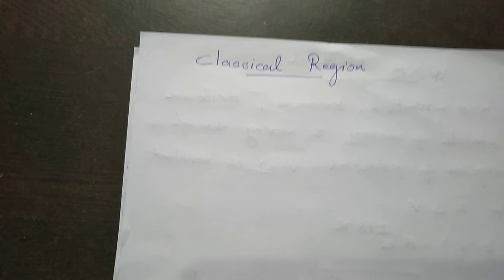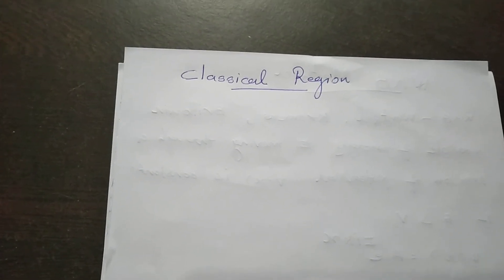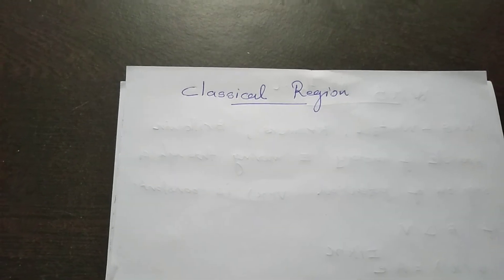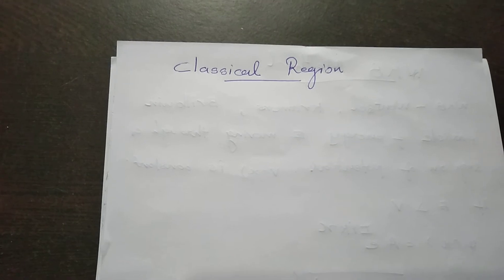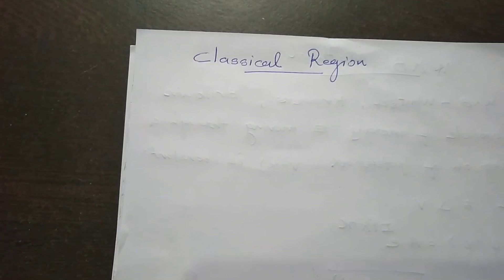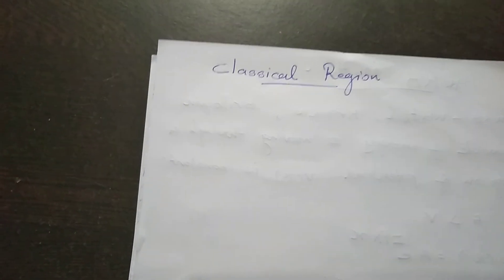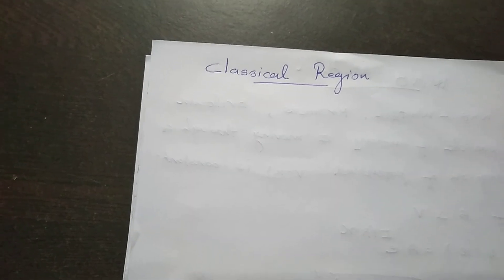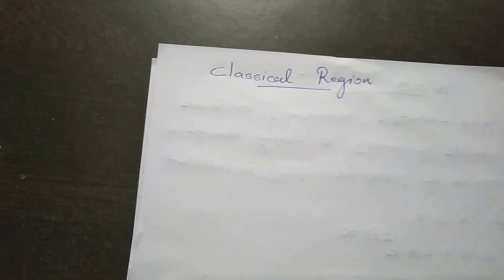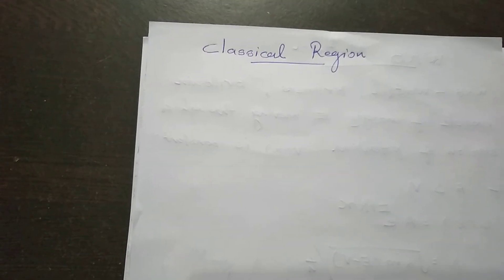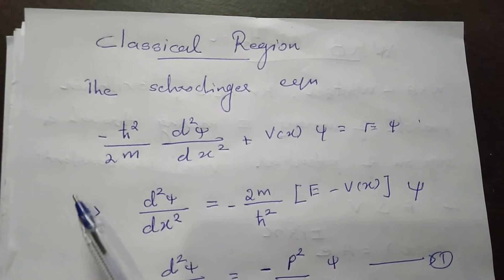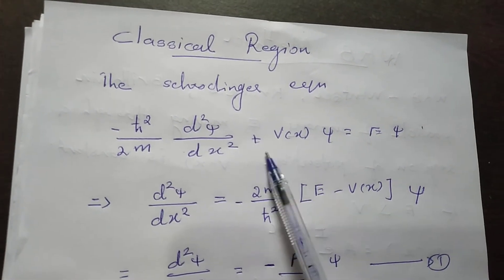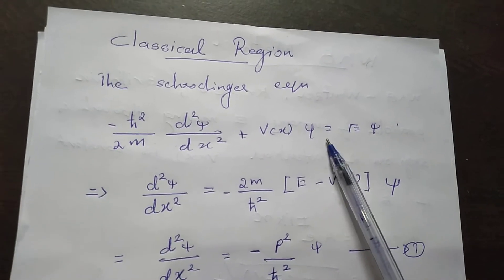The first step is to consider the Schrödinger equation. This is a system with an incident particle and a V(x) potential energy profile. This is the potential energy V of the system. Then we have the Schrödinger equation: minus h-cut squared by 2m, d squared psi by dx squared, plus V(x) psi, which is equal to E psi, where E is the total energy of the incident particle.